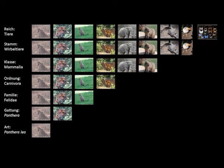Das Prinzip der binären Nomenklatur ist streng hierarchisch. Die kleinste Einheit bildet die Art. Ähnliche Arten werden in Gattungen, ähnliche Gattungen in Familien, ähnliche Familien in Klassen und ähnliche Klassen in Stämme eingeteilt.